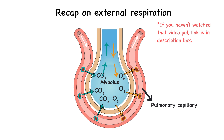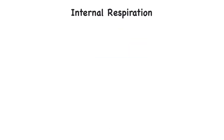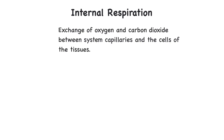In this video, we are going to focus on internal respiration. Maybe you can guess what that is. If you guess that internal respiration is gas exchange at the cellular level, you are correct. Internal respiration is the exchange of oxygen and carbon dioxide between systemic capillaries and the cells of the tissues. Internal respiration is also called systemic gas exchange. This is the exchange that happens within the body after gas exchange has occurred in the lungs.